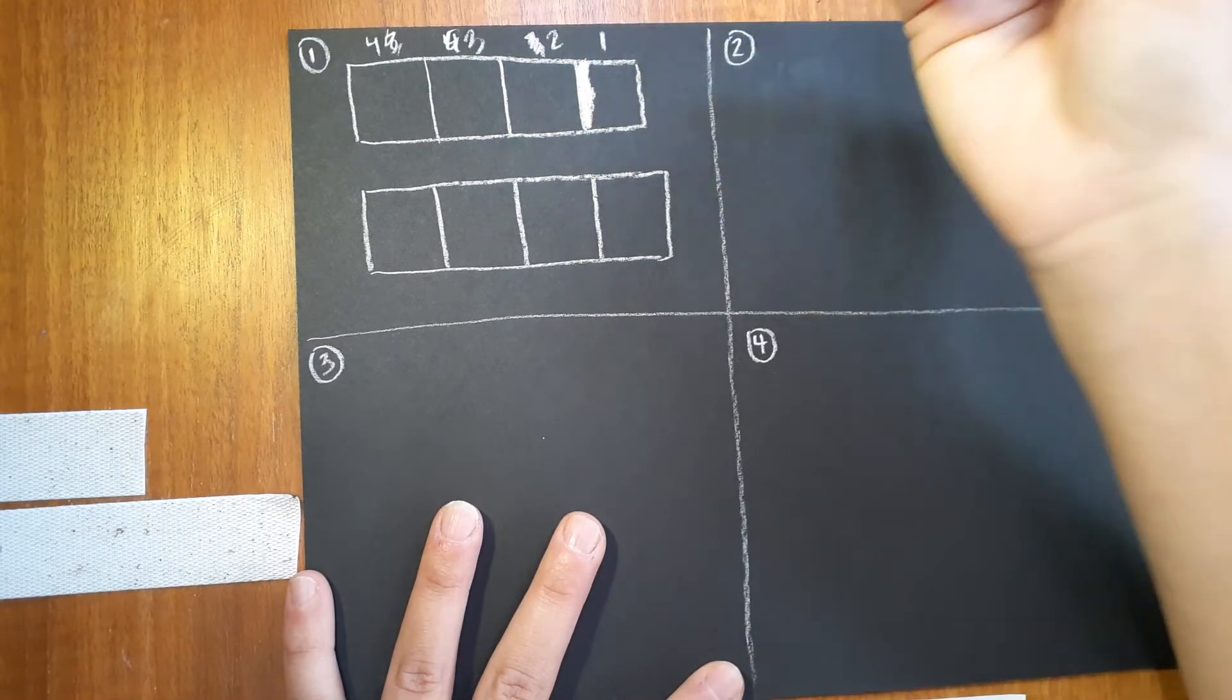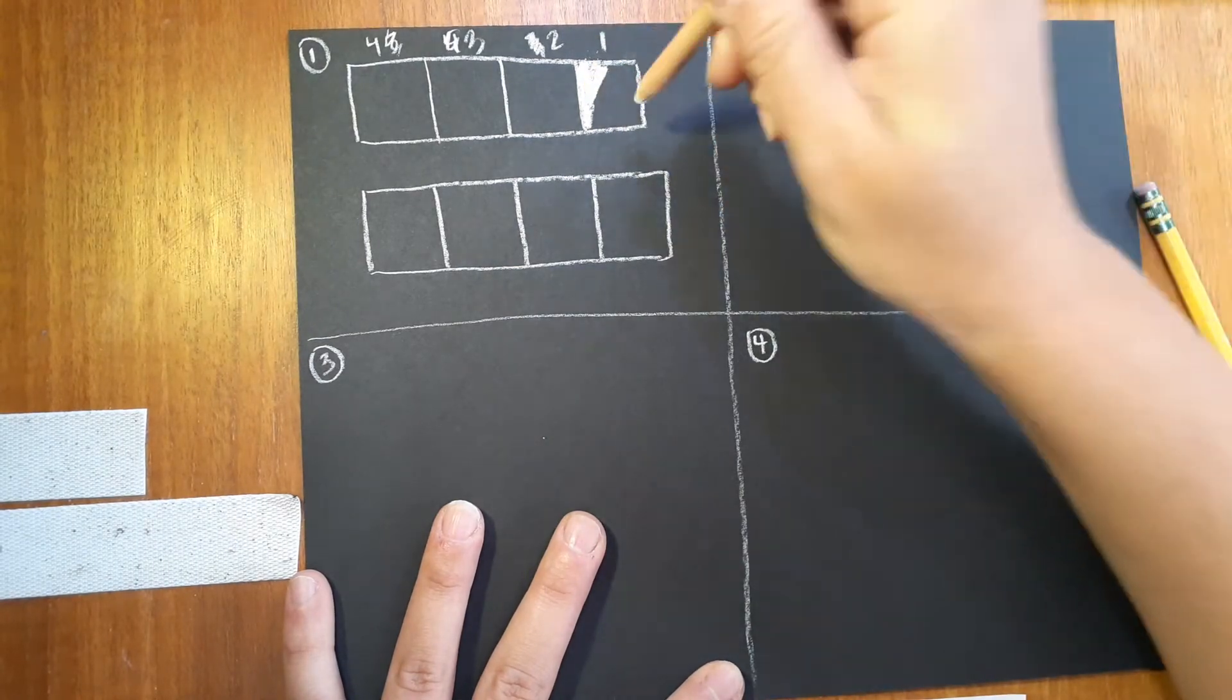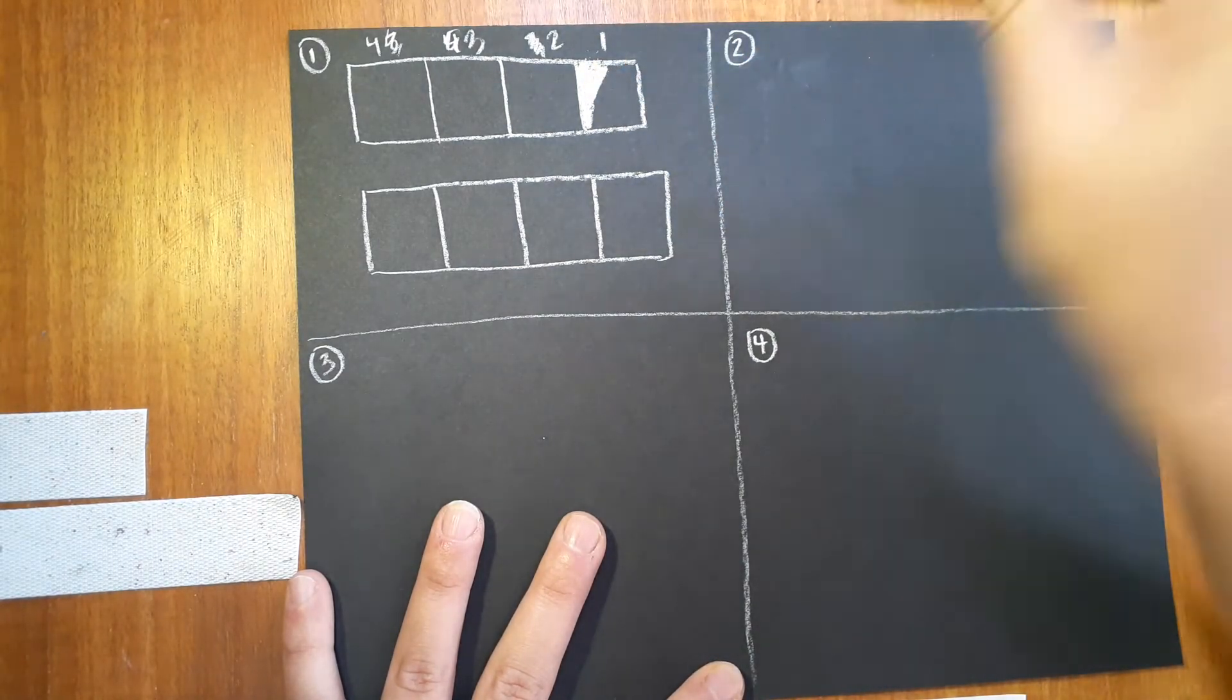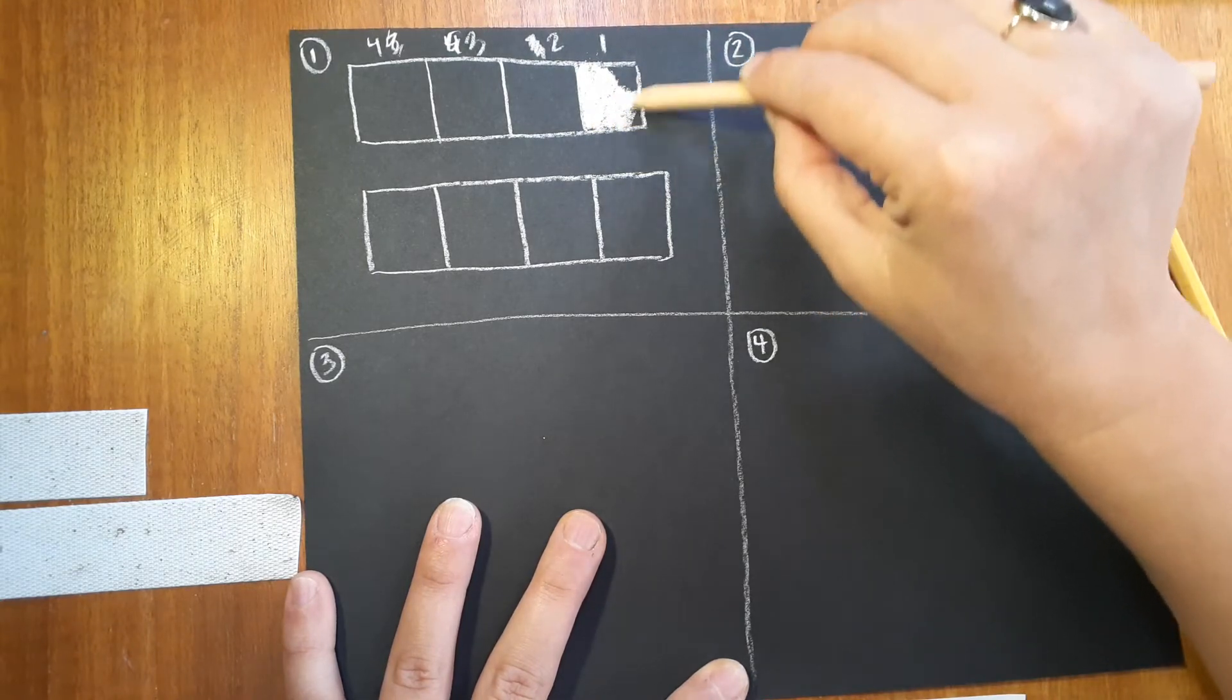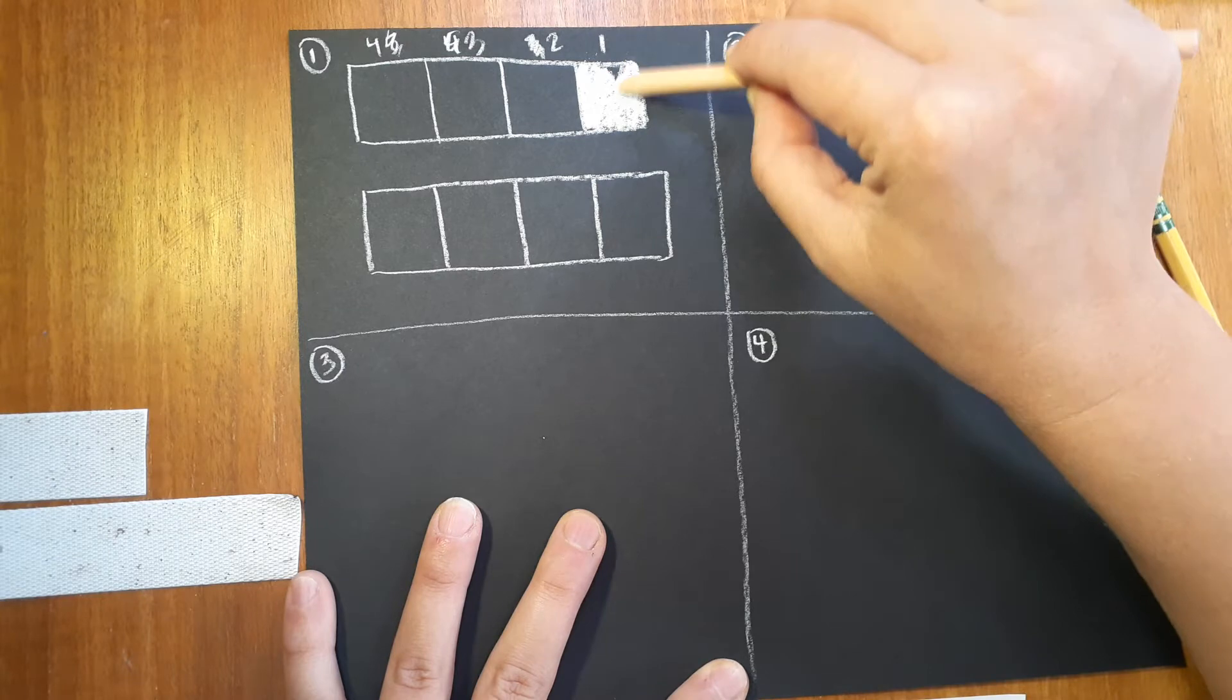So go ahead and do that, and again try to use the side of your pencil, not up and down but like pinch it, hold it to the side. Use the side of that charcoal pencil to get a good value gradient going.